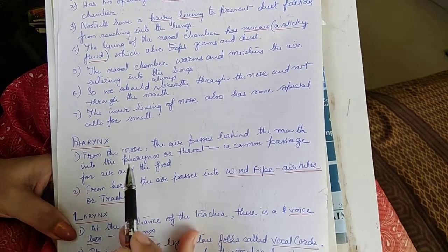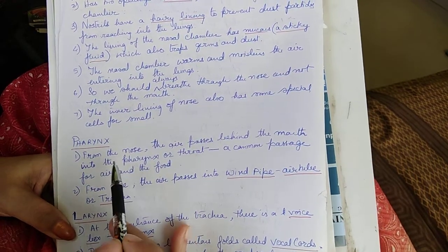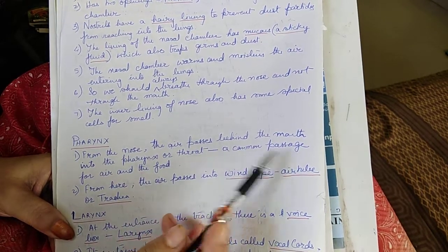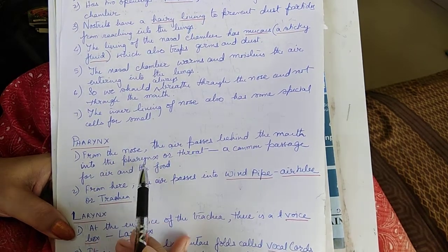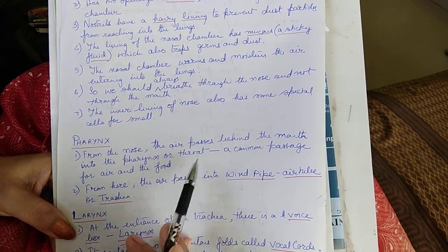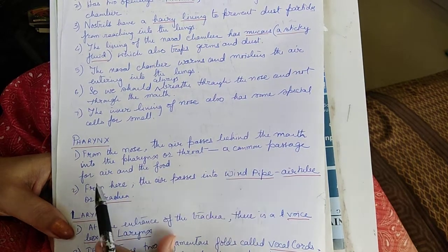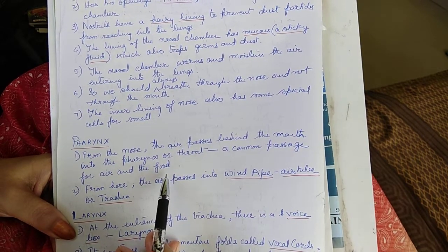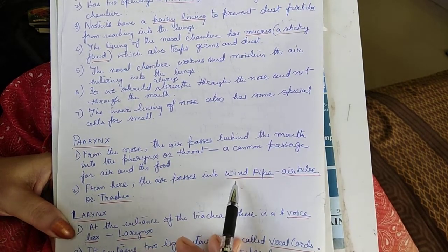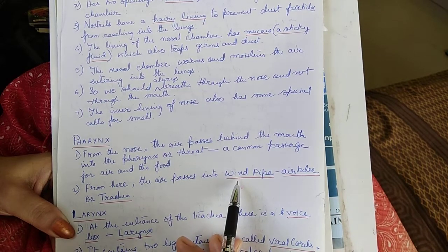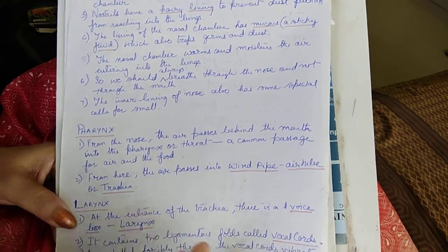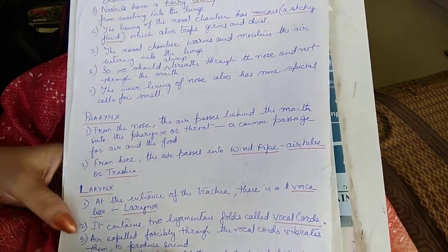Then comes the pharynx. From the nose, the air passes behind the mouth into the pharynx, or throat. It is a common passage for both air and food. From here, the air passes into the windpipe, also called the air tube or trachea.